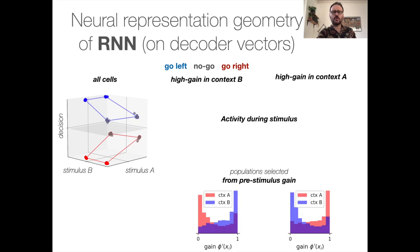However, more interestingly, we can go and try to see what's going on in each of these populations that we found out. Here is all of them together. And in particular, we're going to focus on these populations that are gain modulated. So this population, population B, we showed you before, has a high gain during context B, and so we're going to call this population the population with a high gain in B.